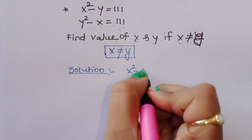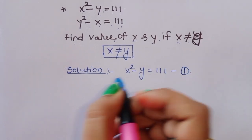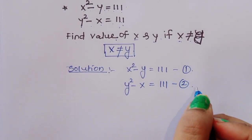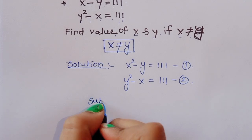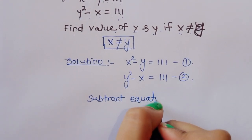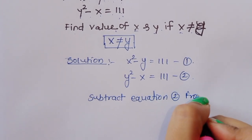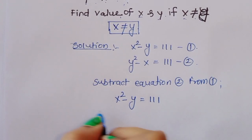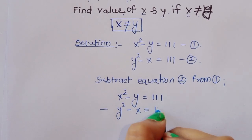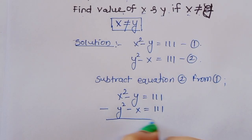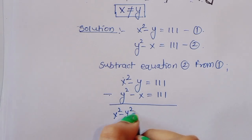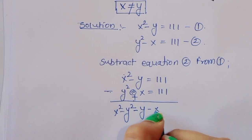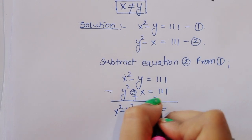Solution: equation 1 is x squared minus y equals 111, and equation 2 is y squared minus x equals 111. We subtract equation 2 from equation 1. This gives us: x squared minus y, minus (y squared minus x), which equals 111 minus 111. After subtracting, we get x squared minus y squared, then minus y plus x.